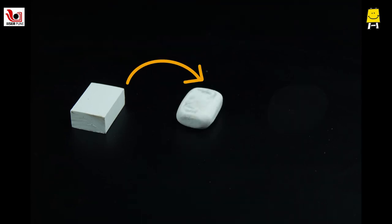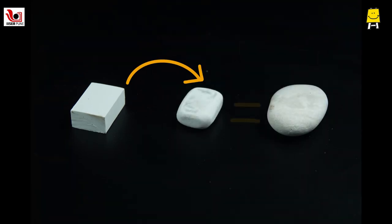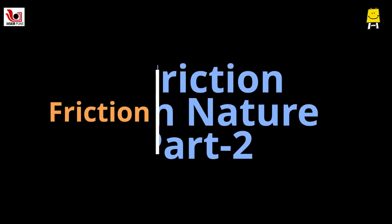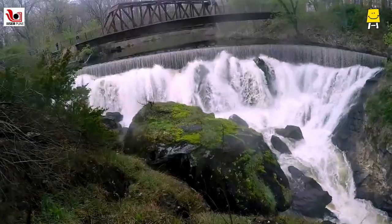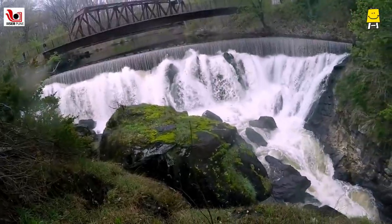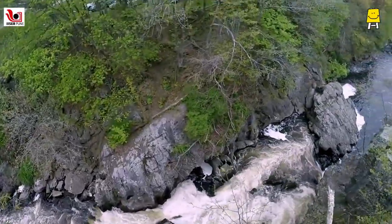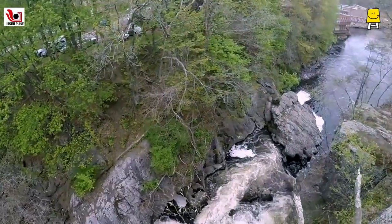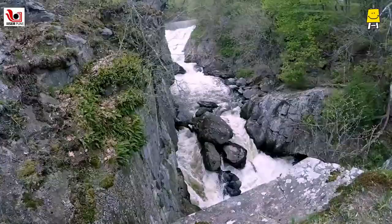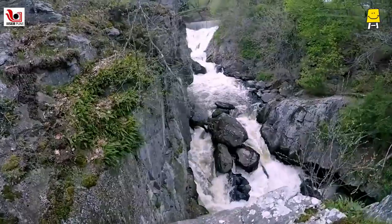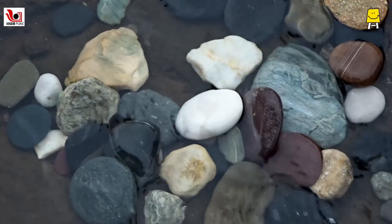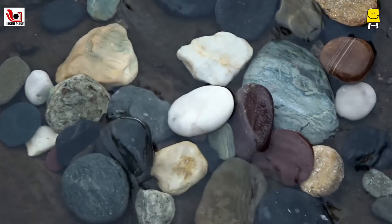Why is the shape of a used eraser and pebble similar? Let's break it down. An irregular rock falls off a cliff, crashes over other rocks many times and finally settles in lakes or at beaches as pebbles.